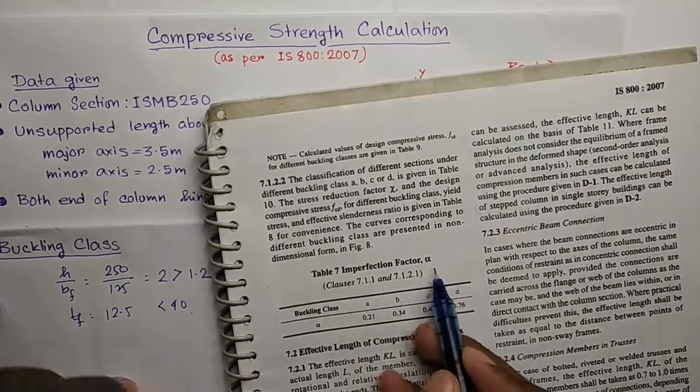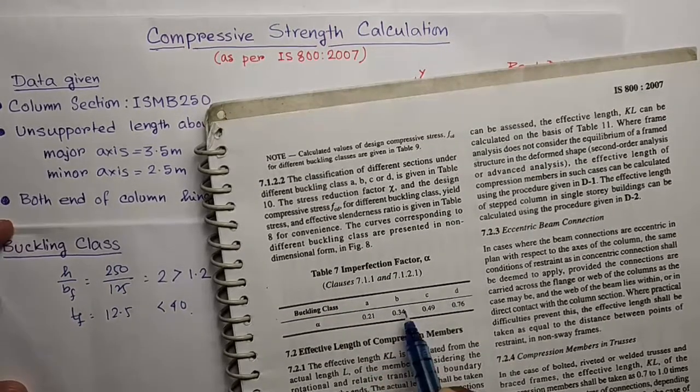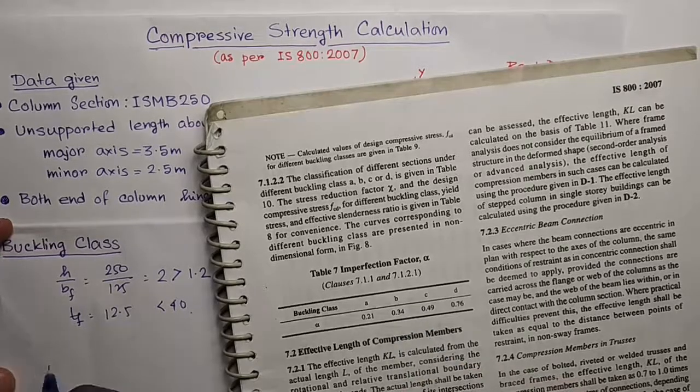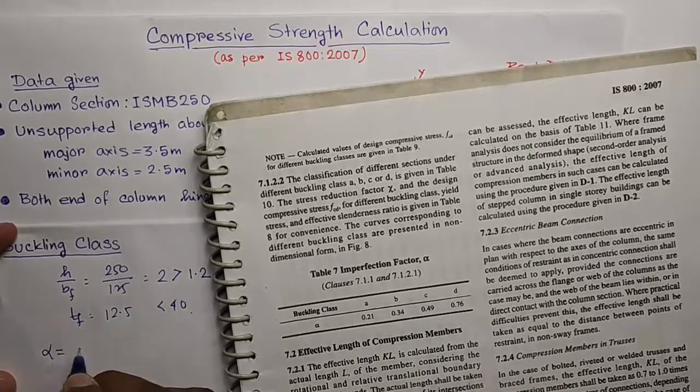In table 7, the imperfection factor alpha is given depending on the buckling class. So the buckling class is B, so the imperfection factor alpha will be 0.34.